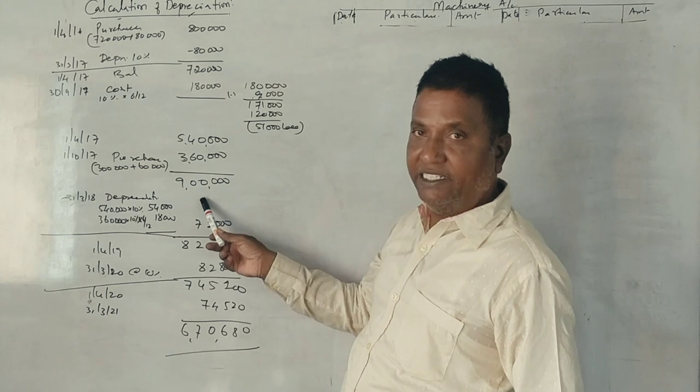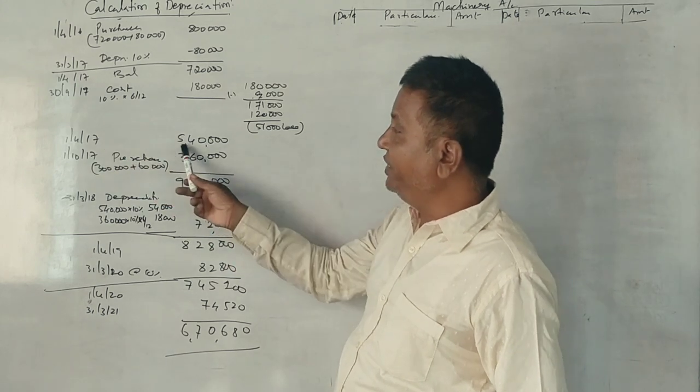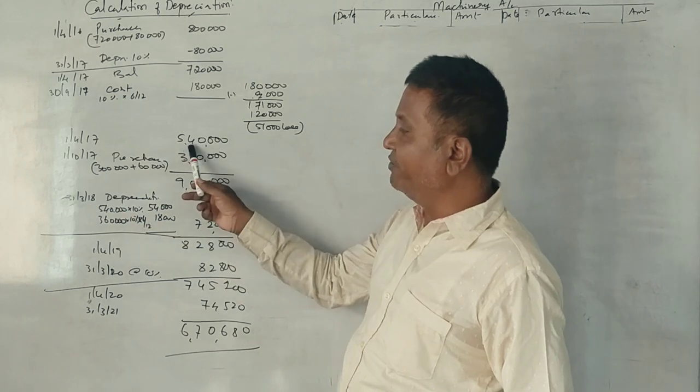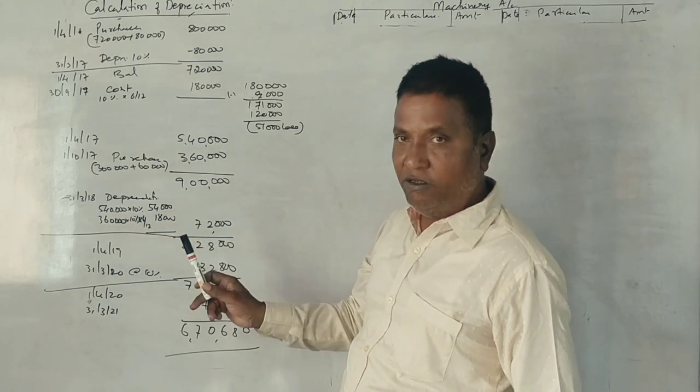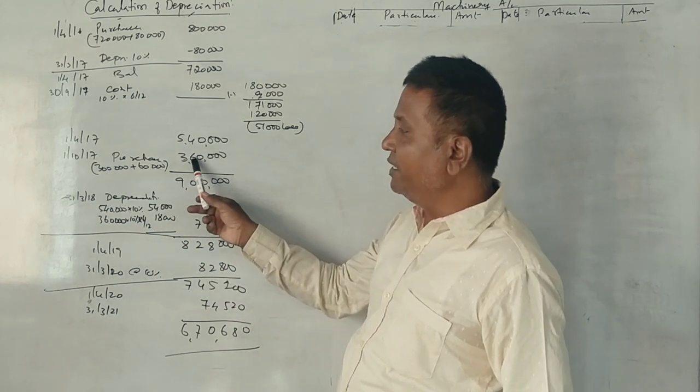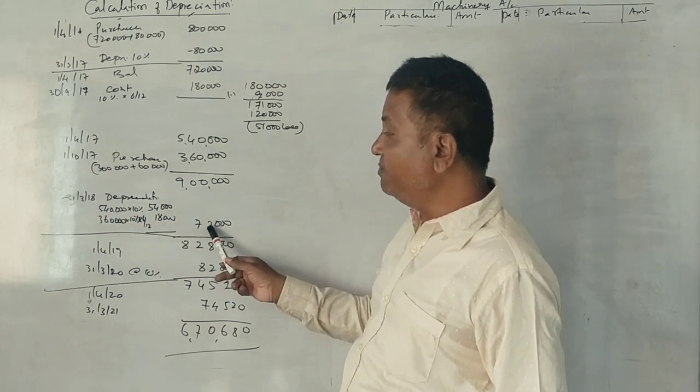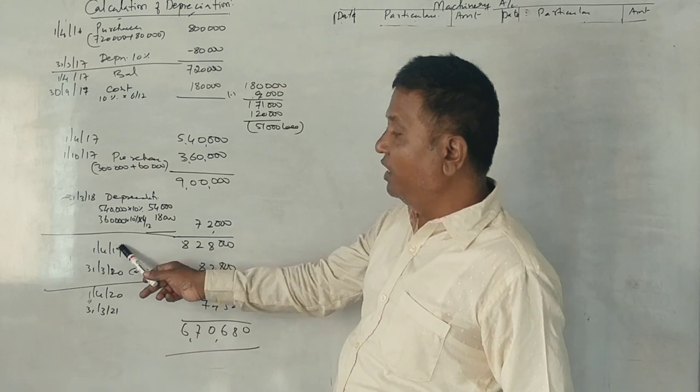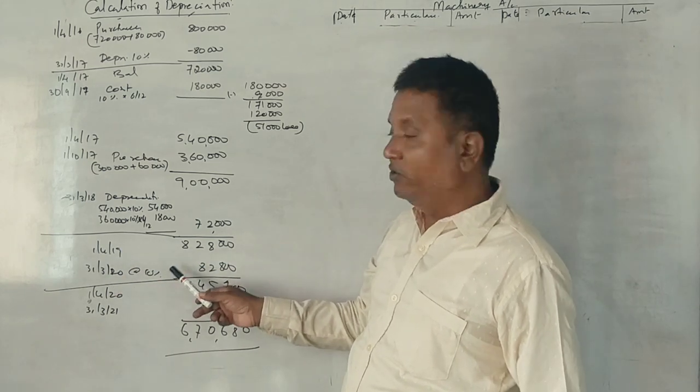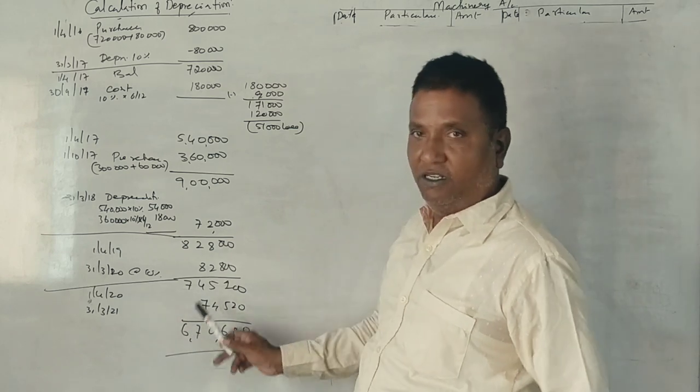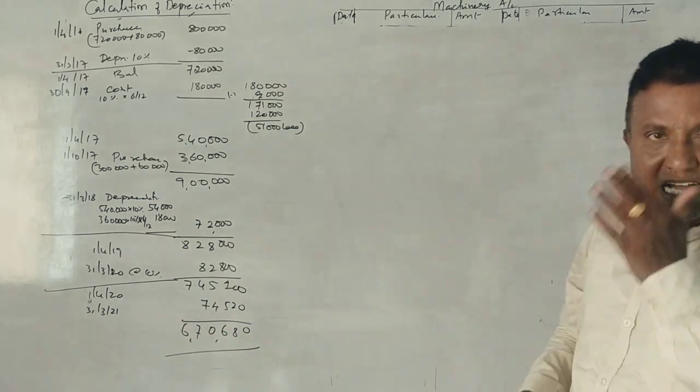This machine from April 2017 to March 2018, one year full use, full 10%. October purchase to March, 6 months depreciation. Total $72,000 minus one year. 1st April 2019 to March 2020, one year full 10%. This is the account.